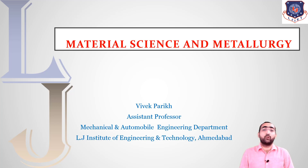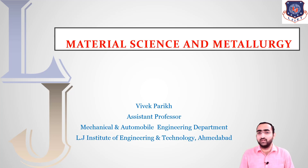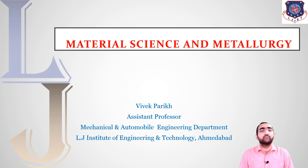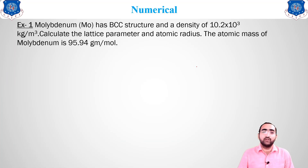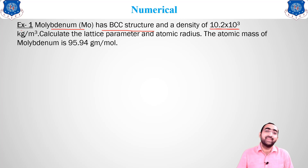Now let us move forward and discuss some examples based on these topics — how we can apply the theories we have studied in a practical use. So let us go for some numericals based on this chapter. Starting with the first numerical: we are given molybdenum as a BCC structure whose density is 10.2 × 10³ kg/m³.